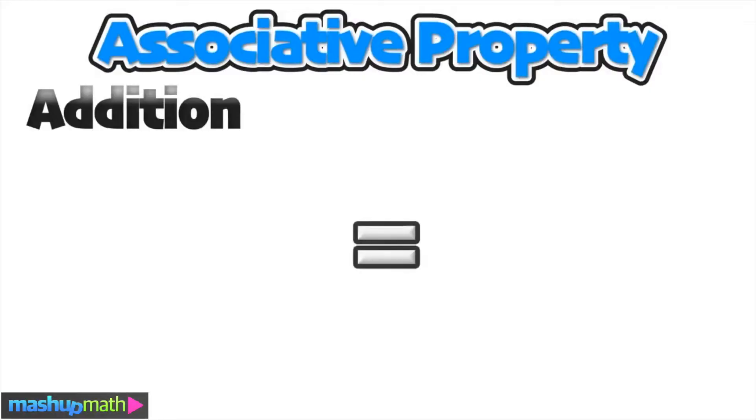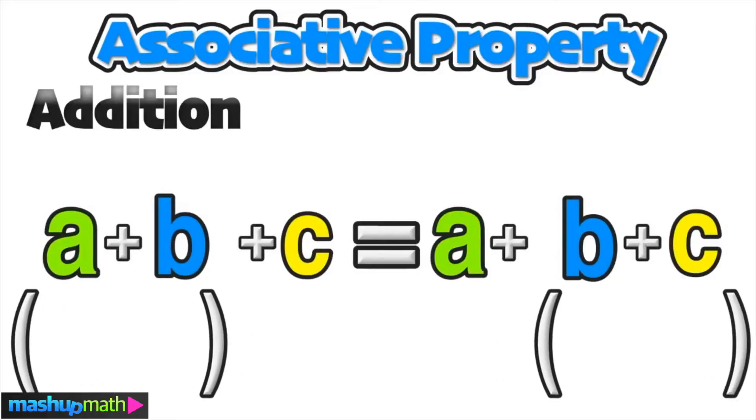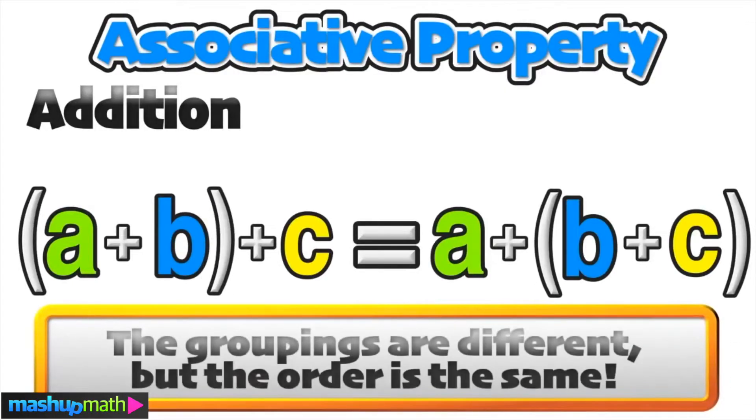Let's begin by showing an example of how the associative property holds for addition. Again, we have the same three terms in the same order—a, b, and c. They can be any real numbers, but grouped differently in parentheses. We should notice that the groupings are different, but the order of the terms is the same.